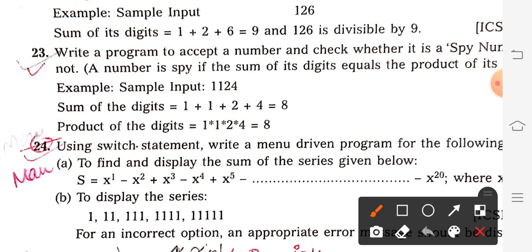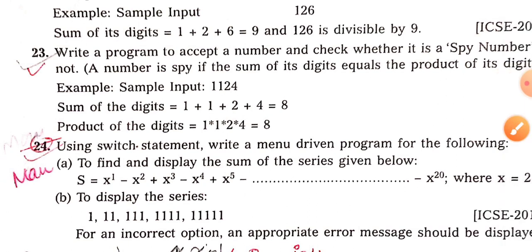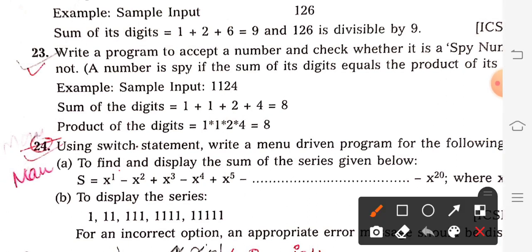But the thing is that here minus plus signs are given alternatively. So in this series you have to focus on one thing: that if my term is odd - x^1, x^3, x^5 and like this...